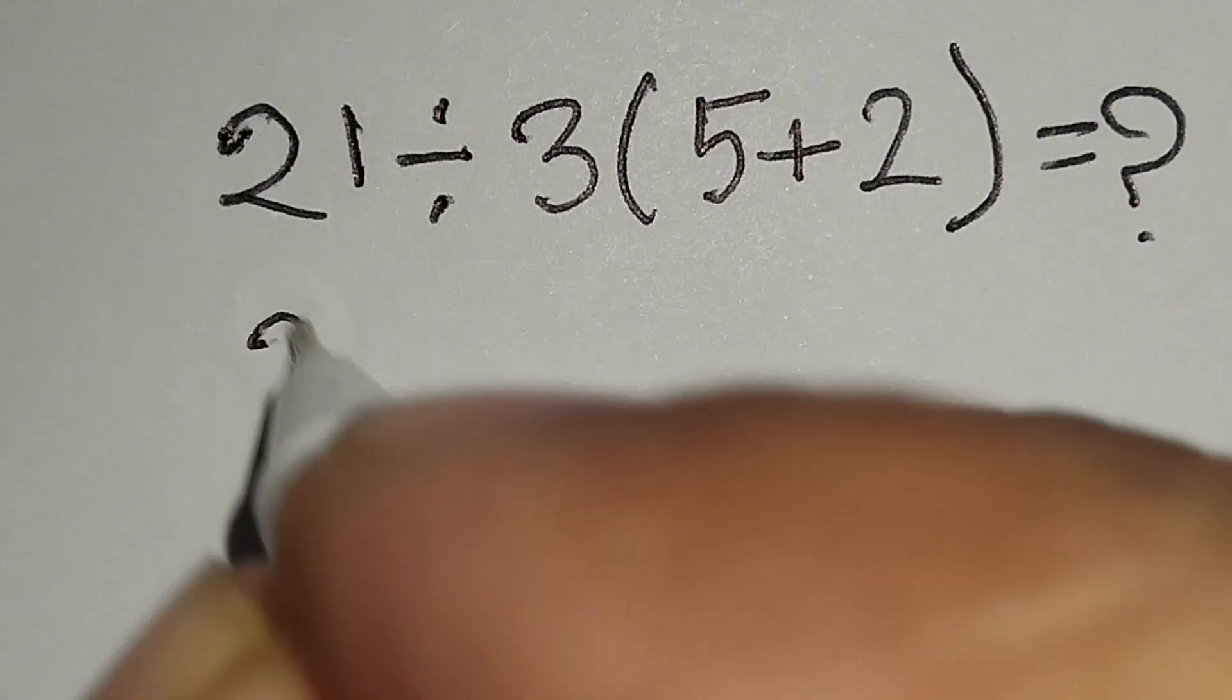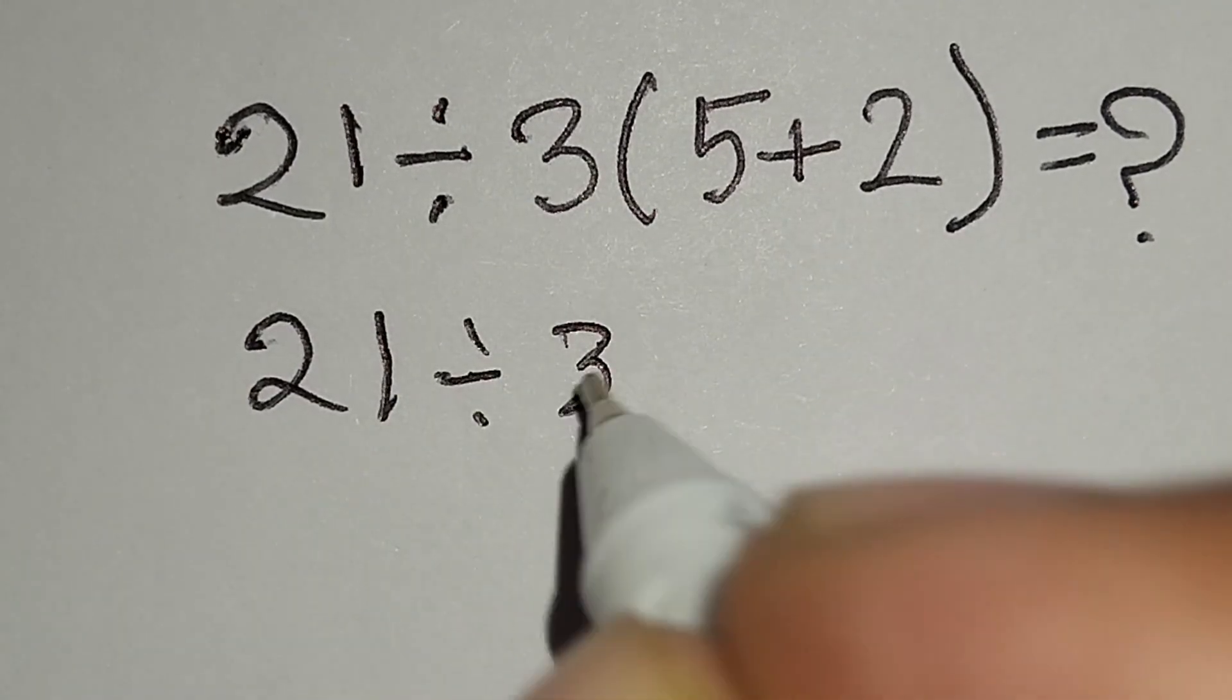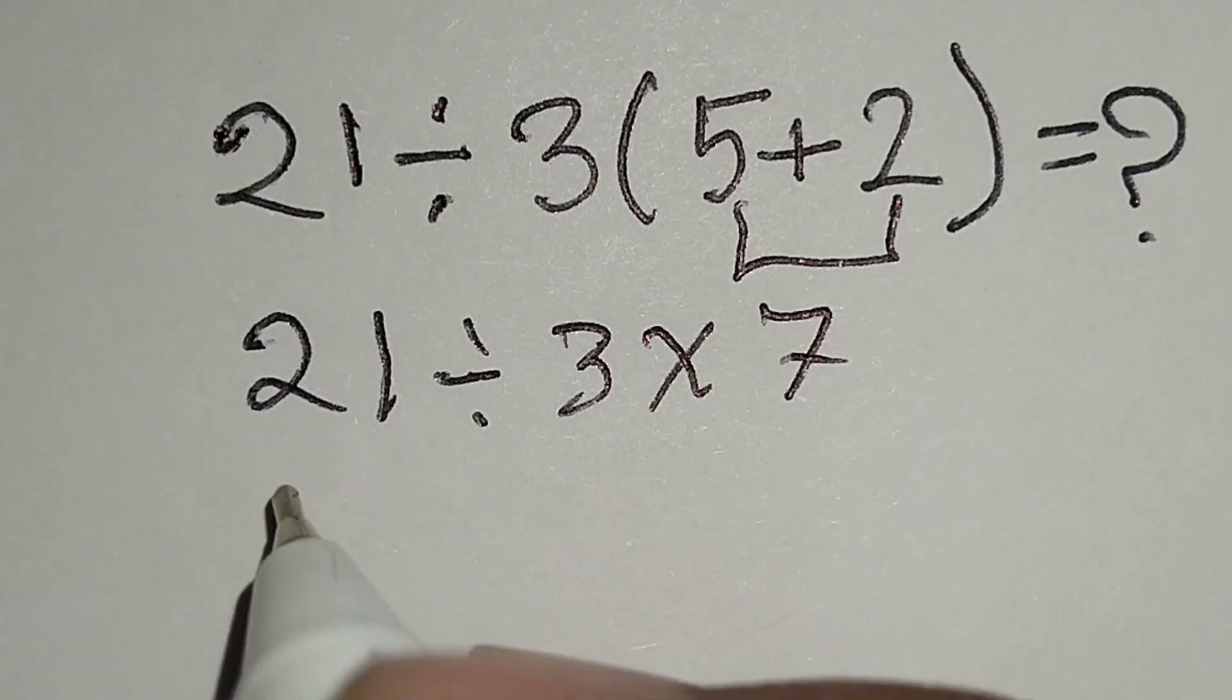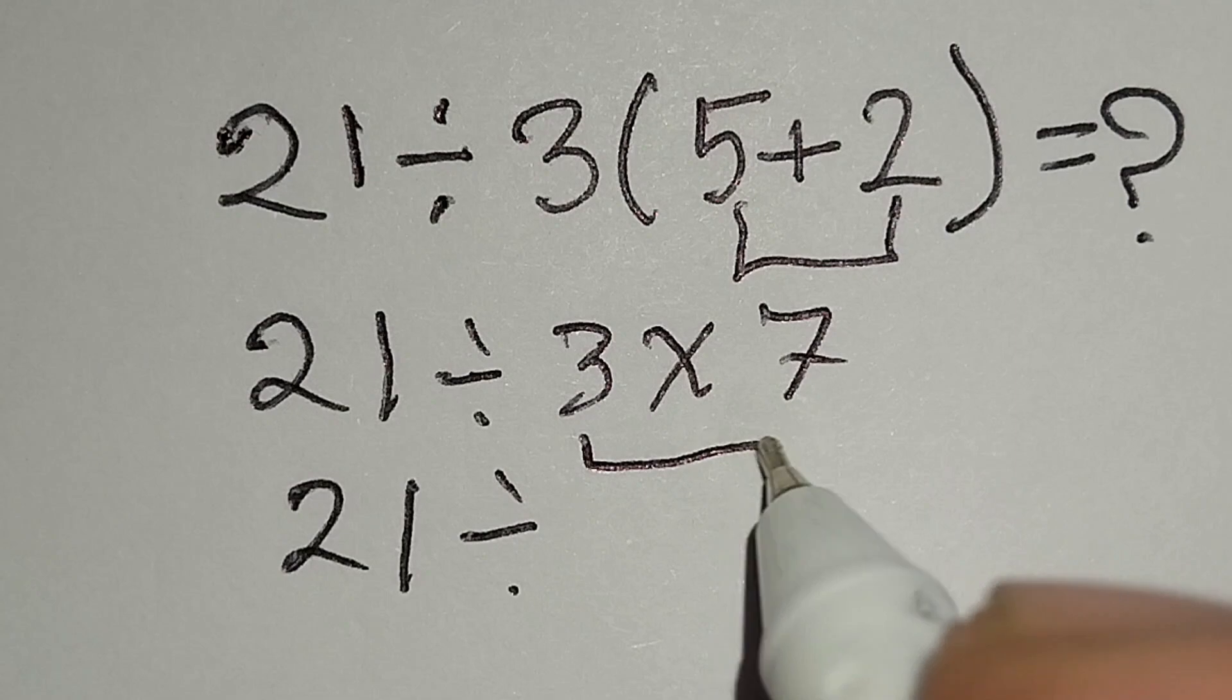Here, 21 divided by 3, multiply 5 plus 2 gives us 7. 21 divided by 3 multiply 7...